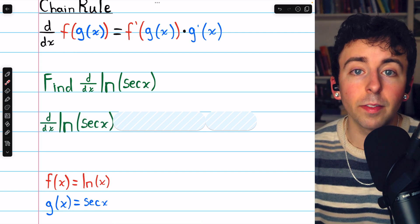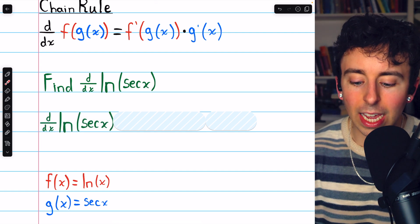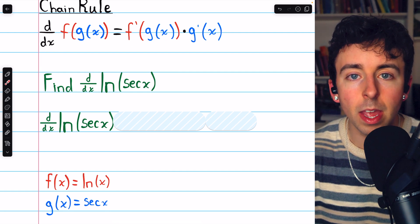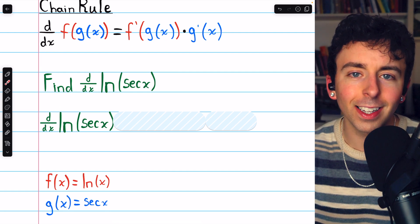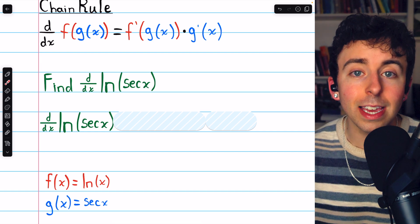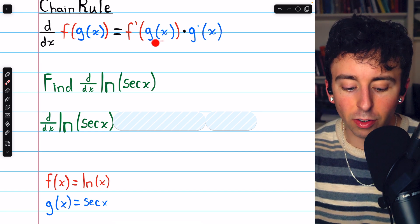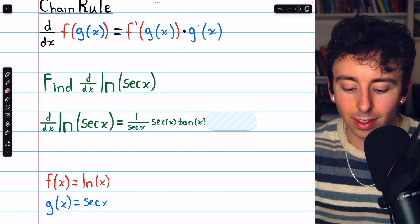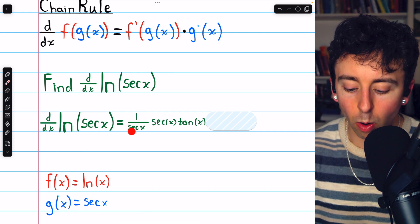So the derivative of the natural log of secant of x, well, that will begin with f prime of g. The derivative of the outside function, natural log, is just 1 over the input. Remember, we don't want to change the input. We want to leave that g the same.